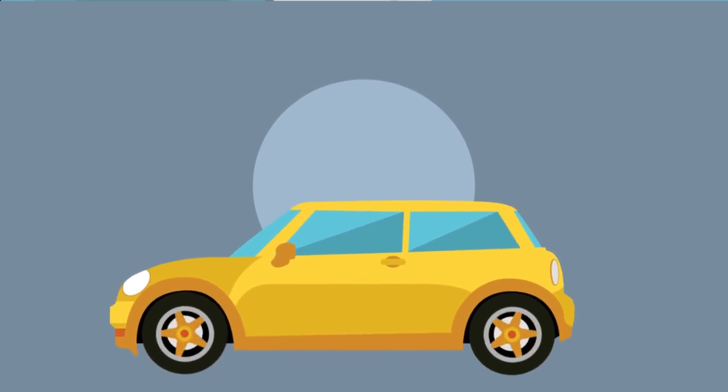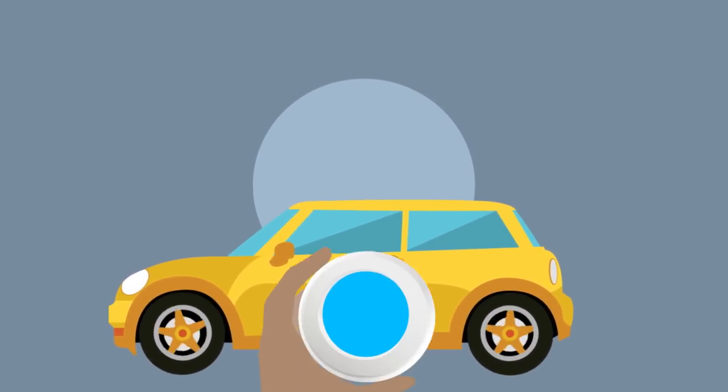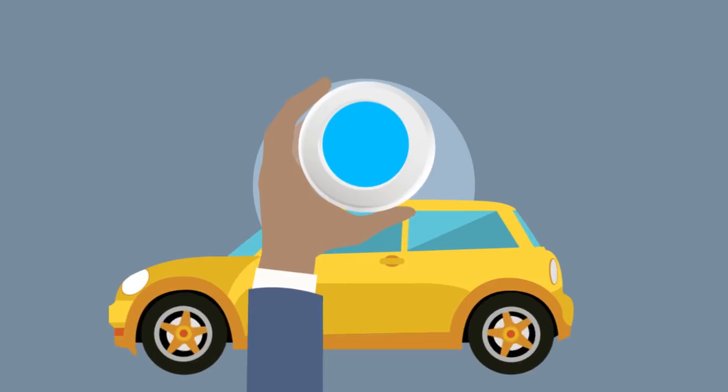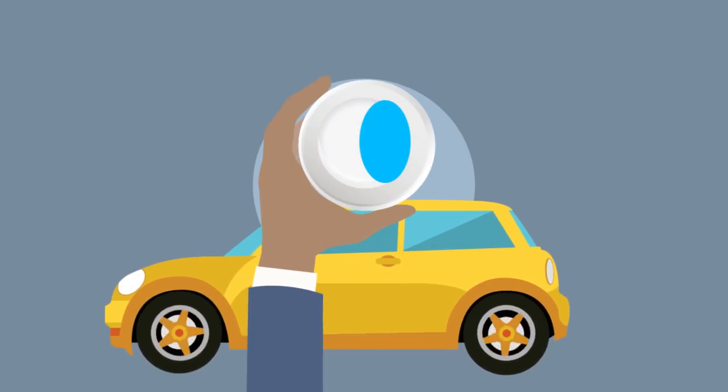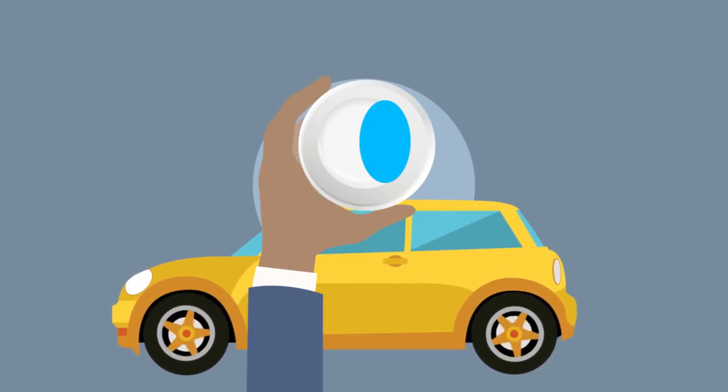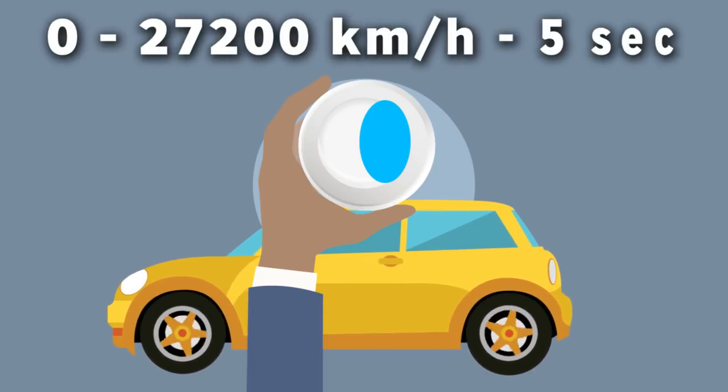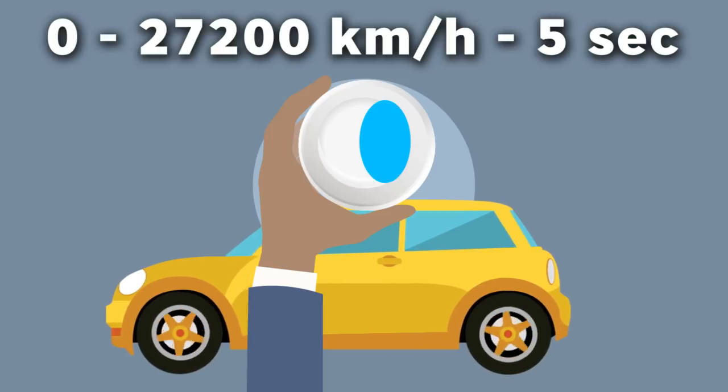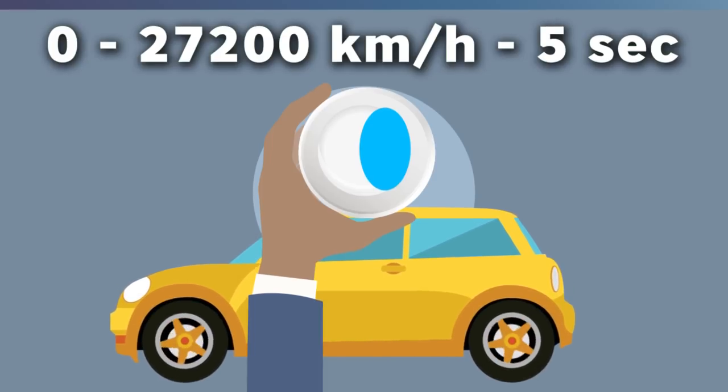Another analogy: when you accelerate in a car, notice how the water in a cup rushes back and stays back until you stop accelerating. Imagine the cup is your body and the water is your blood. And instead of 0 to 100 in 5 seconds, you are going from 0 to 27,200 kilometers per hour when you are fired out of a cannon.